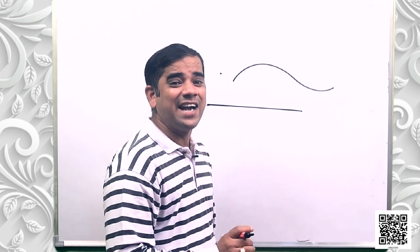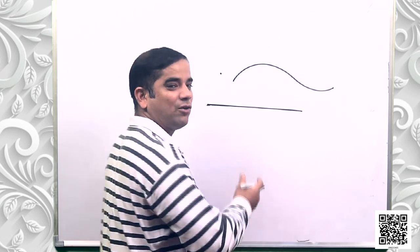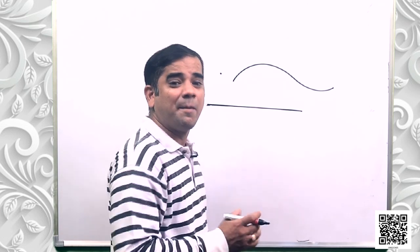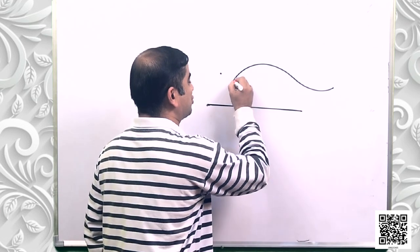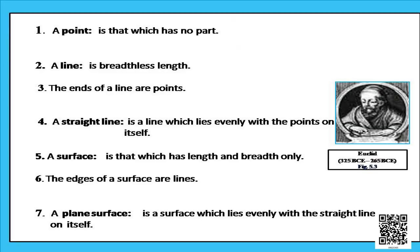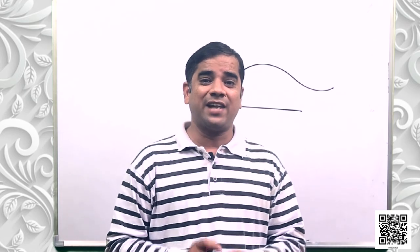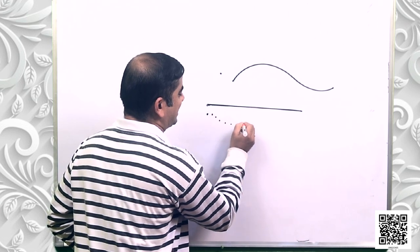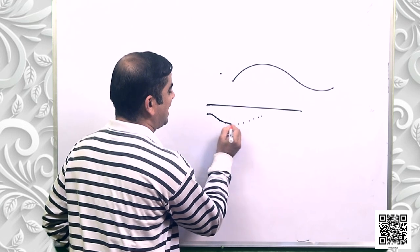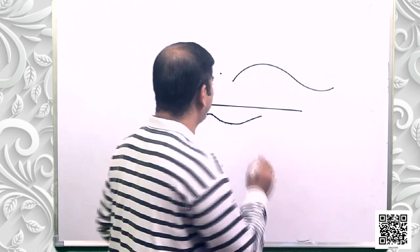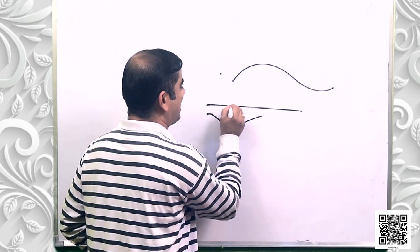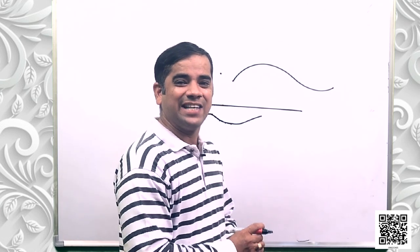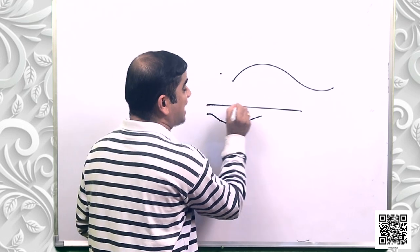The third definition says that the ends of a line are points — since a line is a combination of points, the endpoints have to be points as well. The fourth definition says that a straight line is a line which lies evenly with the points on itself. That means in a straight line the points lie evenly; in a curved line the points are not evenly arranged.